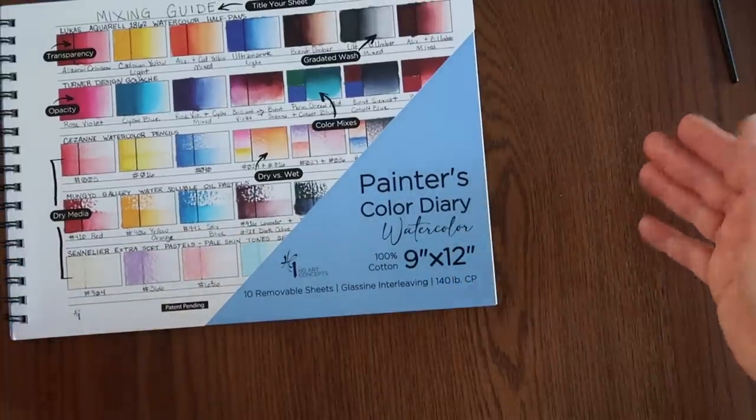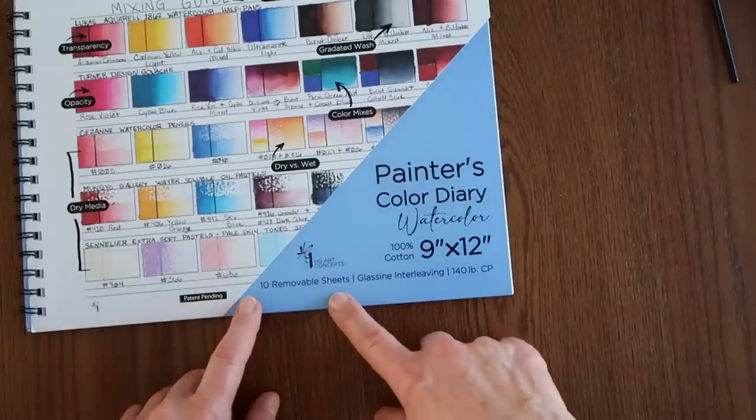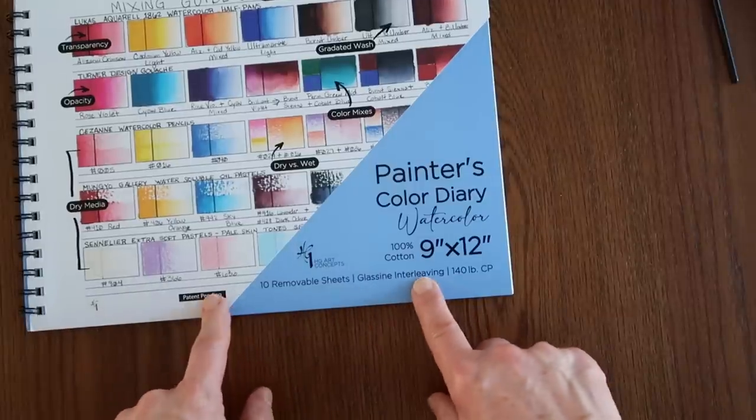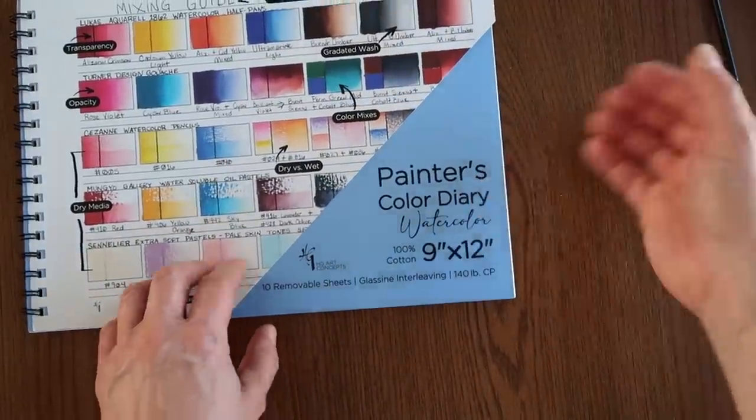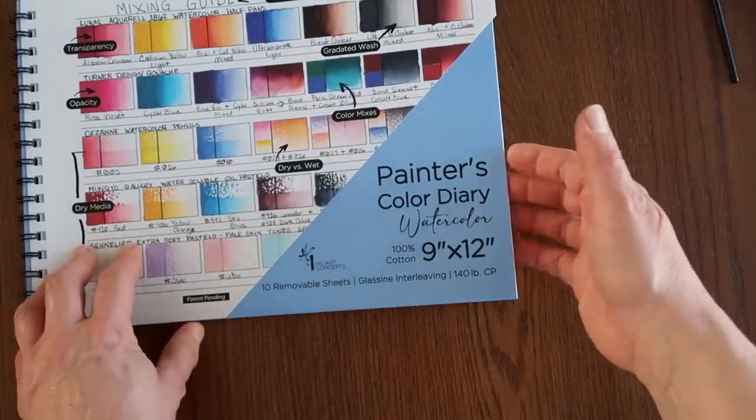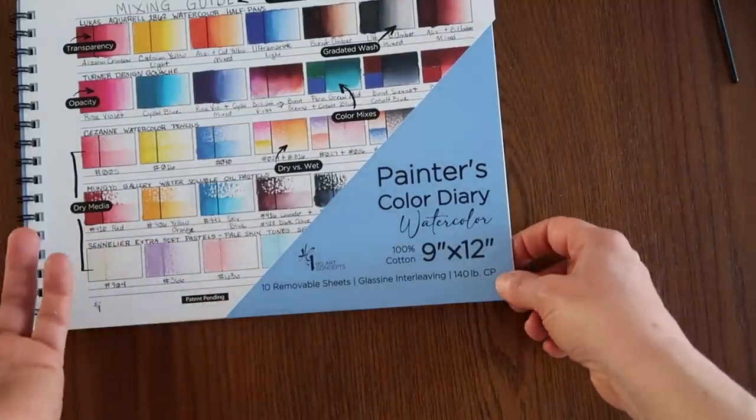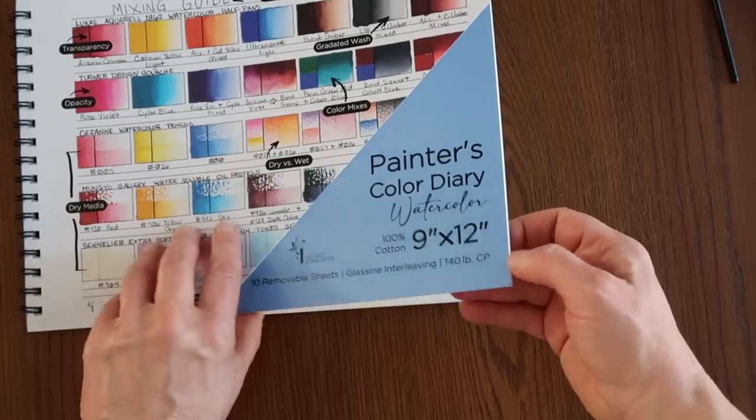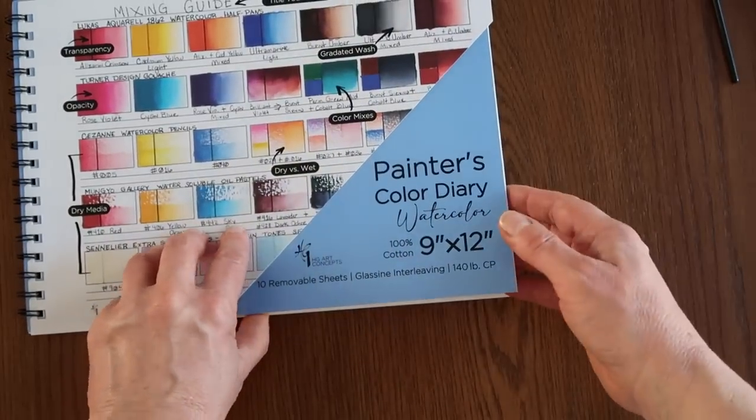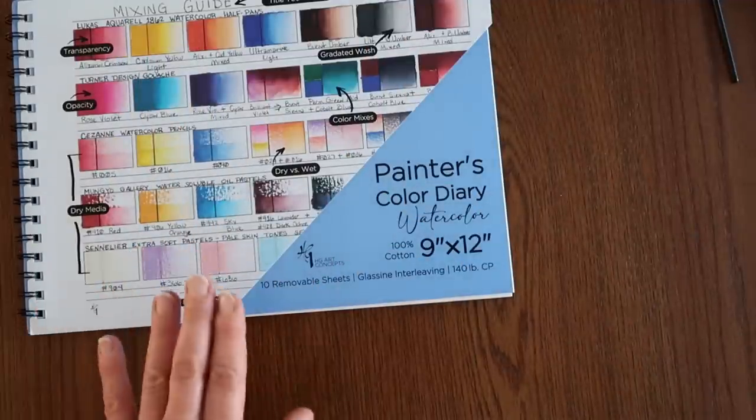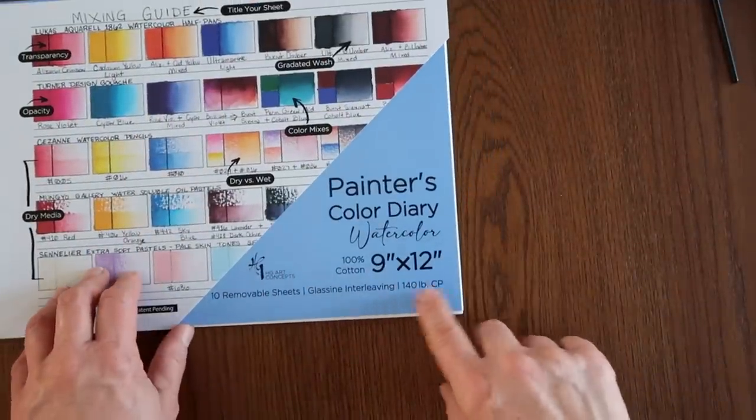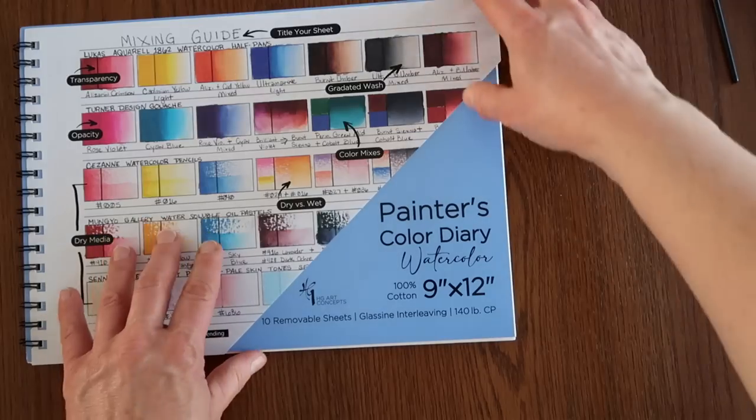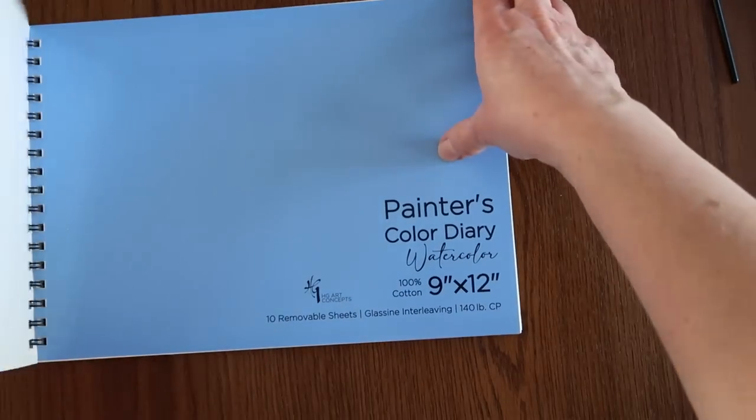Size is 9 by 12. So I might have made that 100% cotton designation a little bit bigger or more in the forefront. Like, hey, you're getting a quality product here. It's not just pulp paper. But it's 9 by 12, which is a nice size. You don't want these too big. There are 10 removable sheets with a glassine interleaving. So it's got glassine paper that you can put in between to keep things from sticking together. Or if you don't quite have it dry and you have to close it, you can at least put that there and not ruin the other side. It is 140 pounds, cold pressed, so it's going to have a nice texture.